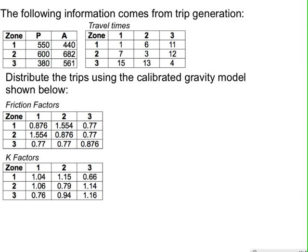In this video we will review the application of the gravity model, which is the model used to distribute trips between zones. It's the second step in the four-step process of travel forecasting. The information for this step comes from the first step, which is trip generation.